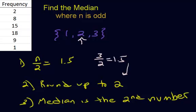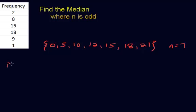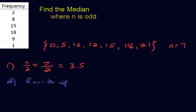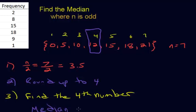Let's try this with a slightly harder example. Here's our next example — we have a set of numbers. It looks like we have 1, 2, 3, 4, 5, 6 — we have seven numbers. Step one: take n divided by 2, which is 7 divided by 2, which is 3.5. Step two: round that up to 4. Step three: find the fourth number, because that number is our median. So we count 1, 2, 3, 4, 5, 6, 7 — and our median is going to be the fourth number, which is right here. So the median is 12.